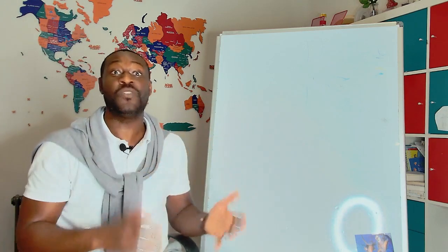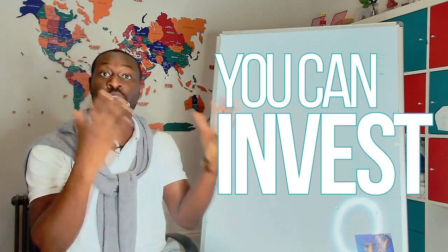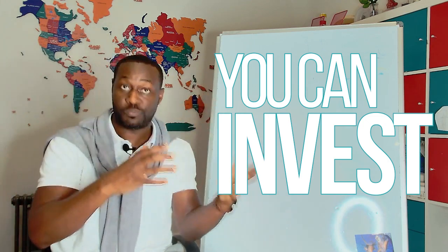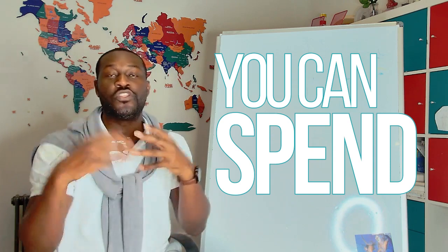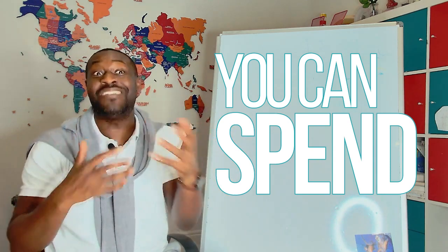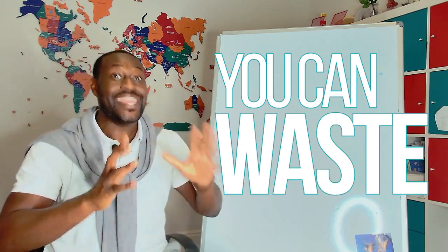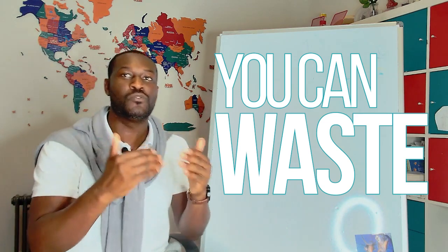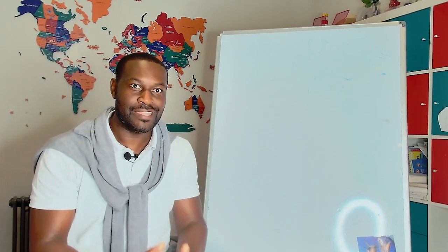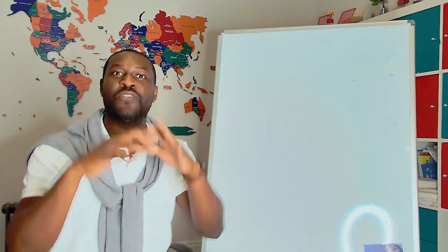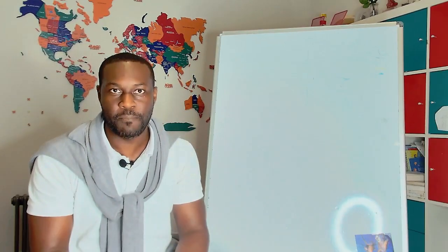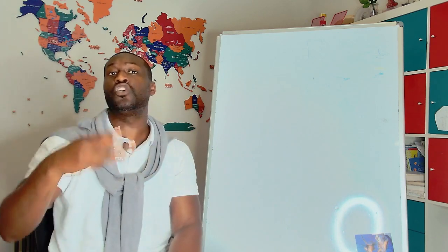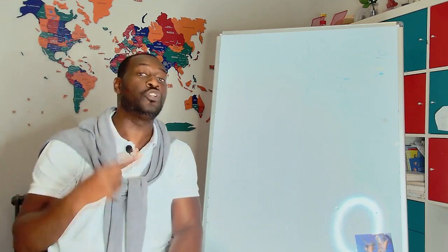So the three things you can do with time are the exact same things. You can invest your time with your beautiful wife, with your children, with your spouse. You can spend your time on things that are not going to bring you back any real reasonable return. Or you could waste your time that many people do on the 40-40-40 plan. So the key is there's three things you can do with time and they're the same three things you can do with money.